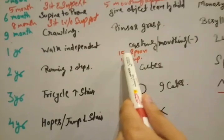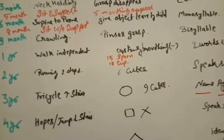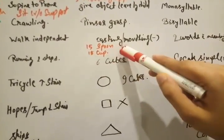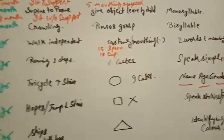In fine motor development, between 1 year and 2 year, at 15 months, he is able to eat with a spoon. This 15, 5, looks like a spoon. And at 18 months, he eats with a cup.